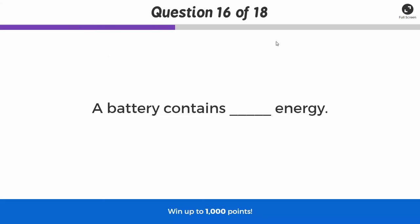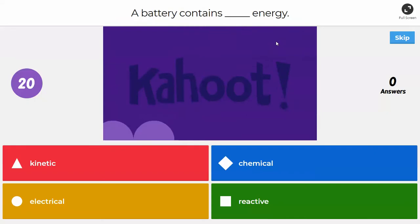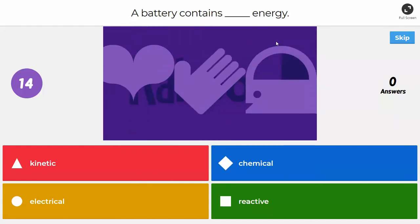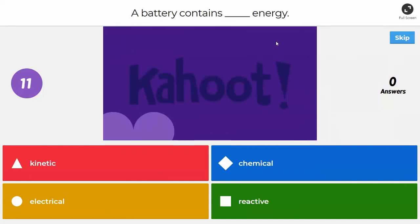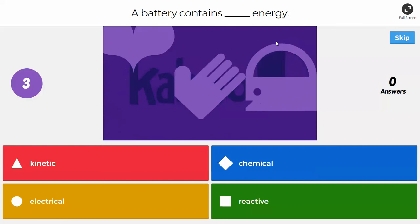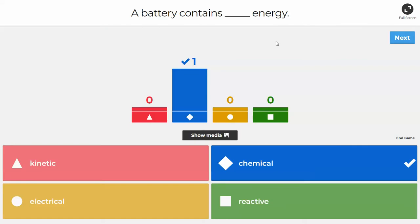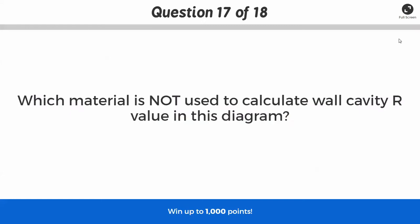Okay, next question. A battery contains what kind of energy? What kind of energy do we get? Is it kinetic energy, chemical energy, electrical energy, or reactive energy? Yeah, chemical energy. The way it's stored is chemical energy. It's a chemical reaction that when created, when it's sort of allowed to happen, it creates voltage and it's converted to electricity. So yes, we use it for electricity, but the actual stored energy is a chemical reaction, so it's chemical energy.